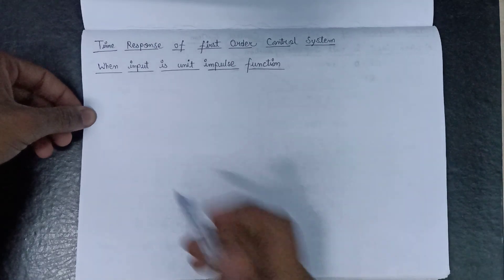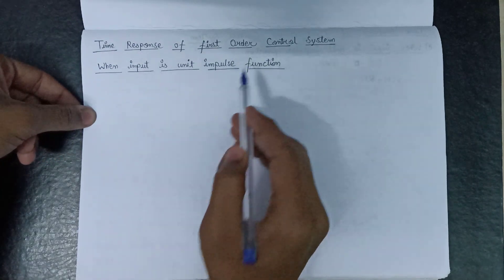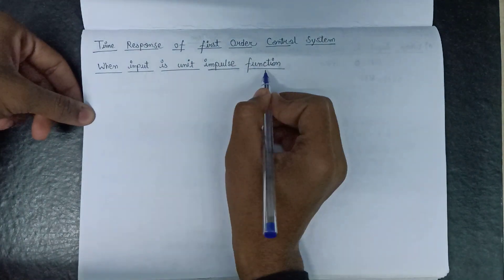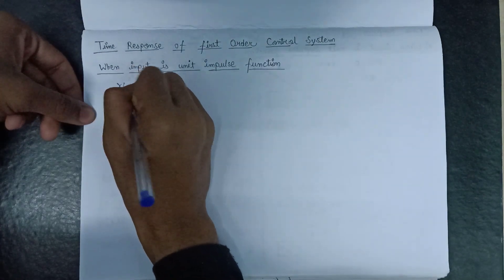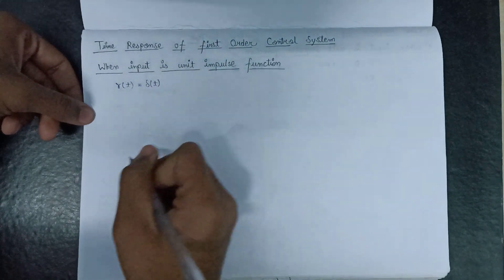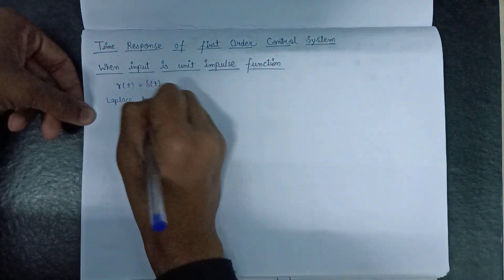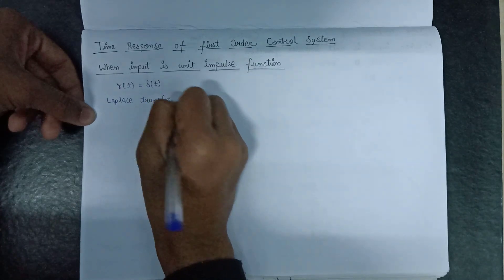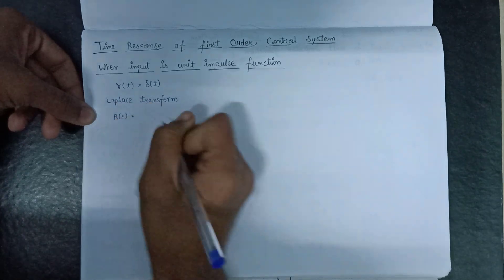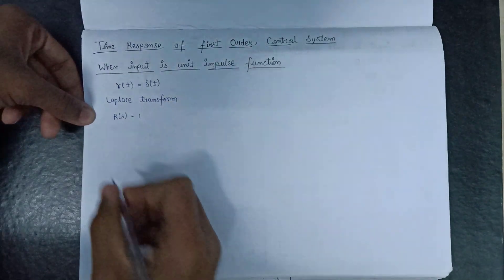Welcome. In this lecture we are going to learn about the time response of a first order control system when the input is a unit impulse function. Since we are applying a unit impulse function as input, our input signal R of t will be equal to delta. On taking the Laplace transform we get R of s, and the Laplace transform of the unit impulse function delta will always be equal to 1.